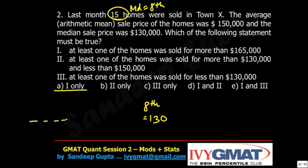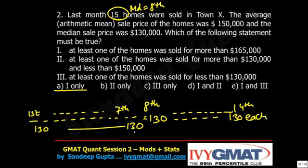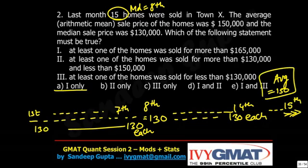Is it possible that all the values from 1st to 7th are also 130? And is it also possible that up to the 14th value everything is 130, and just the 15th value is very large, so that my average value is equal to 150? To adjust the average, only one value can be disturbed and the remaining values I can keep the way I want. Is this feasible? At least one possibility: from the 1st to the 14th value, everything is 130.